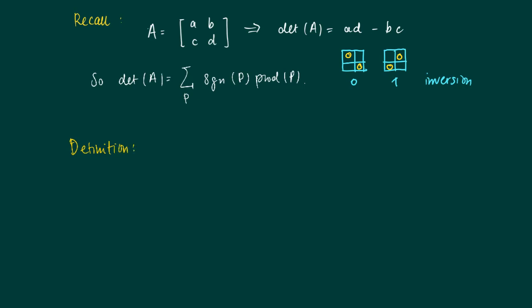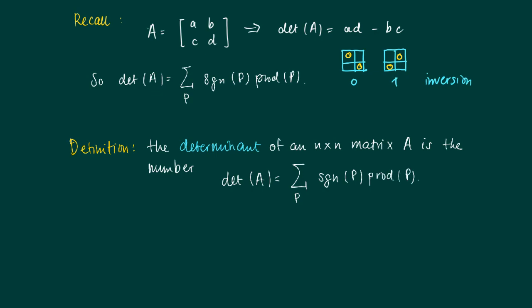So now we define for the most general case the determinant of an n by n matrix A. The determinant of an n by n matrix A is the number—so actually that is a function on the space of all matrices—is the sum of all patterns for the matrix A of the sign of P times the product of P with respect to A.